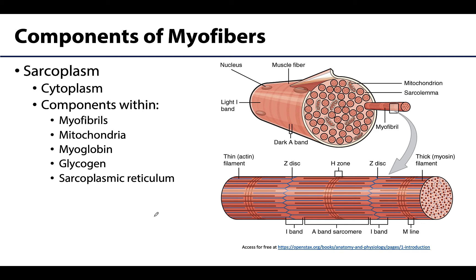The sarcoplasm is basically just the cytoplasm of a skeletal muscle cell, surrounded by the sarcolemma. There is a lot going on in the sarcoplasm — including the SR, which we've already discussed. The bulk of the sarcoplasm is filled with small thread-like structures called myofibrils. A myofibril is a smaller contractile structure within the sarcoplasm — different from the myofiber, which is the whole cell.